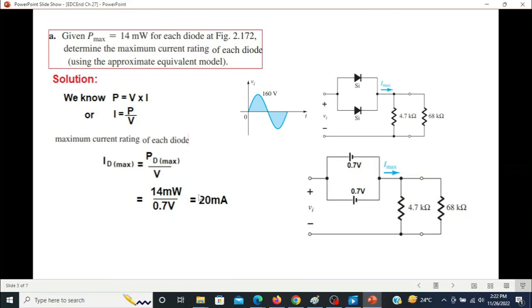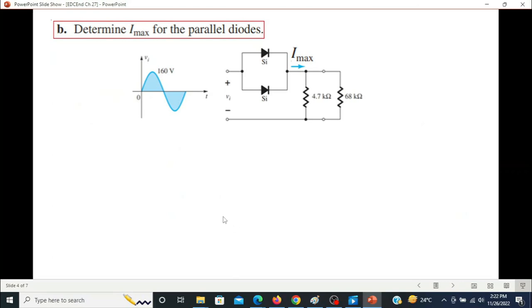Now keep in mind this is the rated current of these diodes, not the maximum current of the circuit. This is the confusion that the student had pointed out. In part 2, the question says determine I max for the parallel diodes.